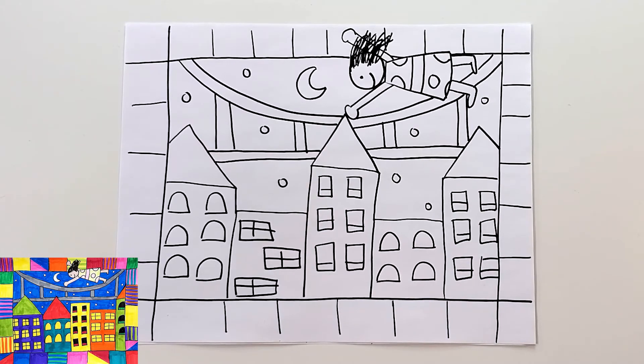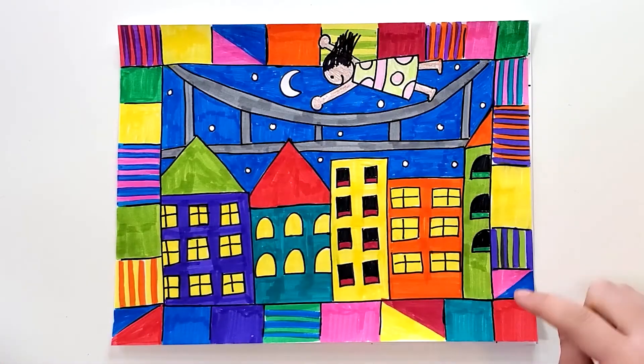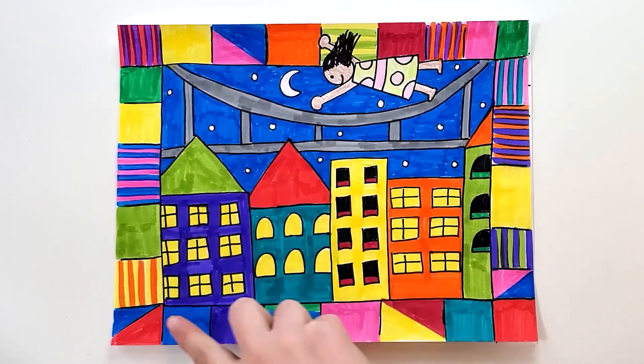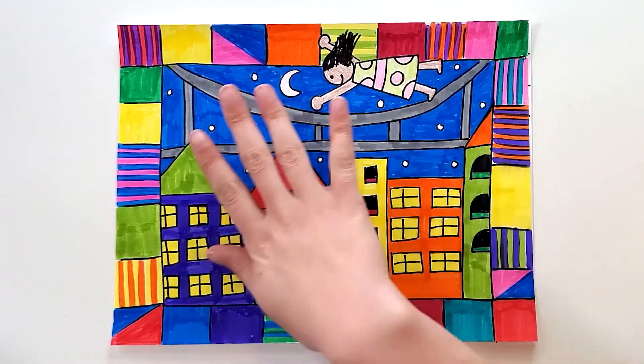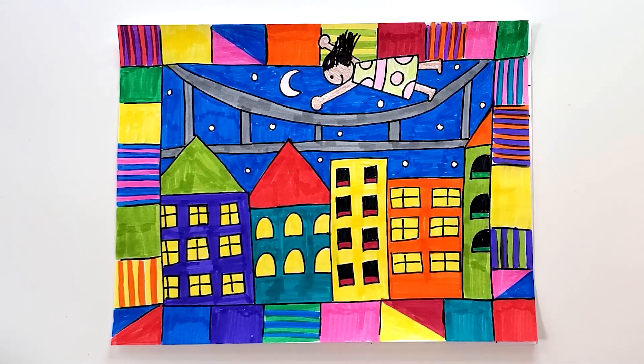That is all the steps for making your Faith Ringgold Tar Beach inspired drawing. Of course, when you color it in, it's going to look much more exciting, kind of like this. I did lots of colors on the quilt border and I also added lots of colors to my buildings and my sky and my person. When you're all done, I think it's a really fun, colorful, and exciting drawing.